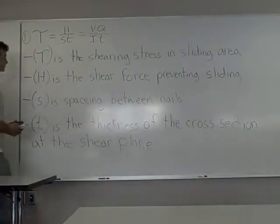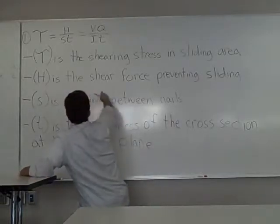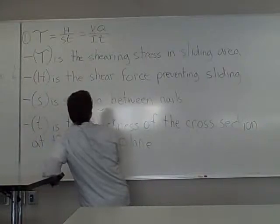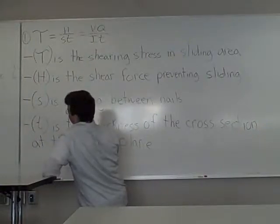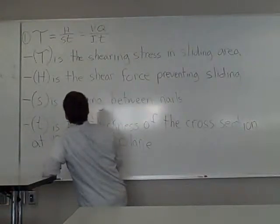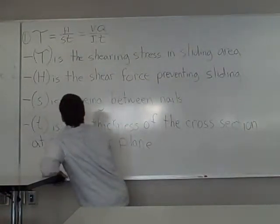And our H is this shear force preventing sliding. It's basically that horizontal force that prevents composite boards from sliding against each other that can be nailed together or they can be glued together or welded together.